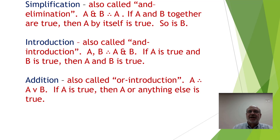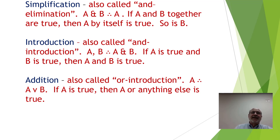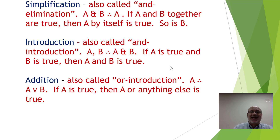Addition, also called or-introduction: A, therefore A or B. If A is true then A or anything else is also true. For example, if 'it is raining outside' is true, then 'it is raining outside or the moon is made of green cheese' also has to be true — anything added to a true statement is true.